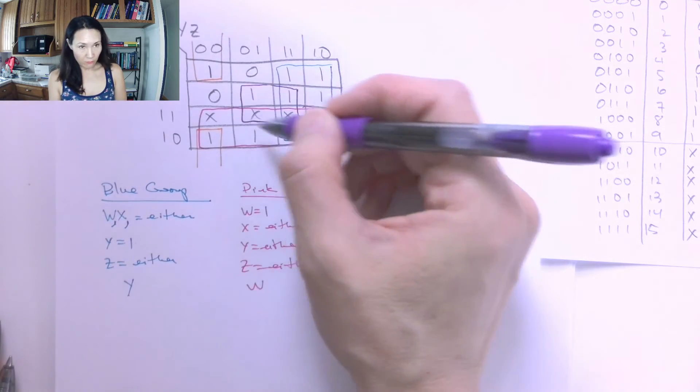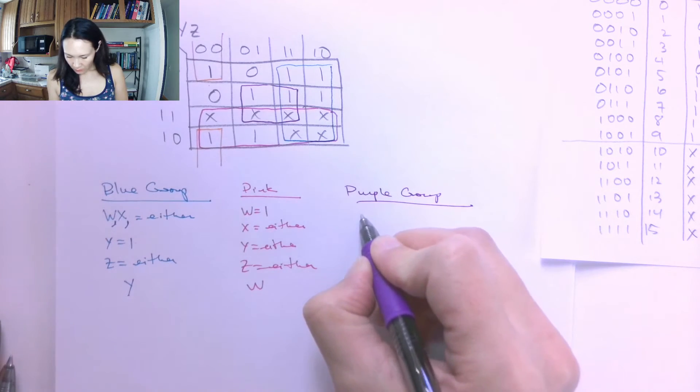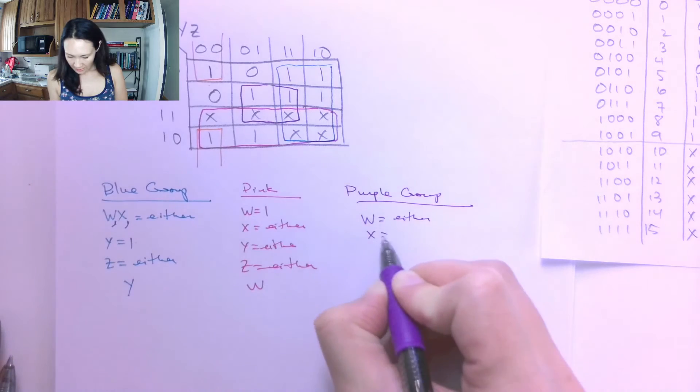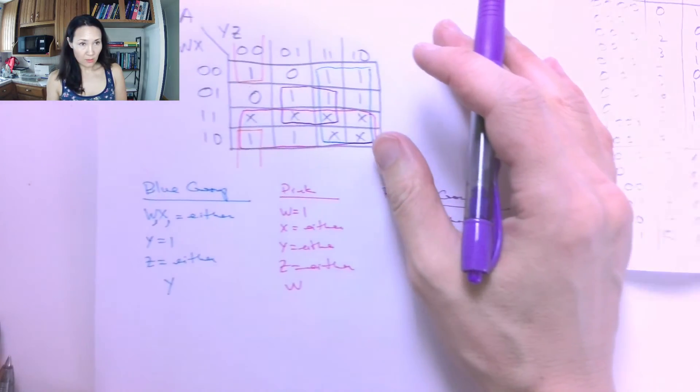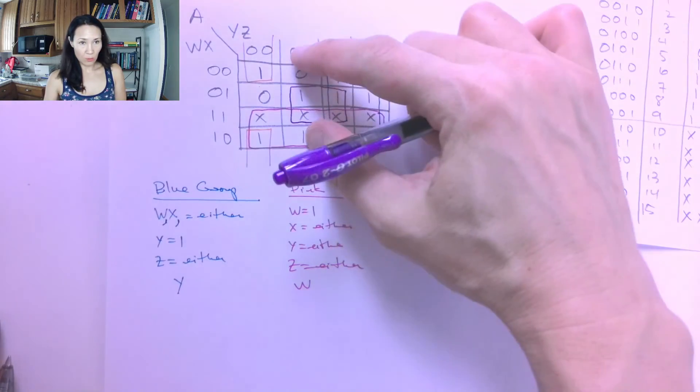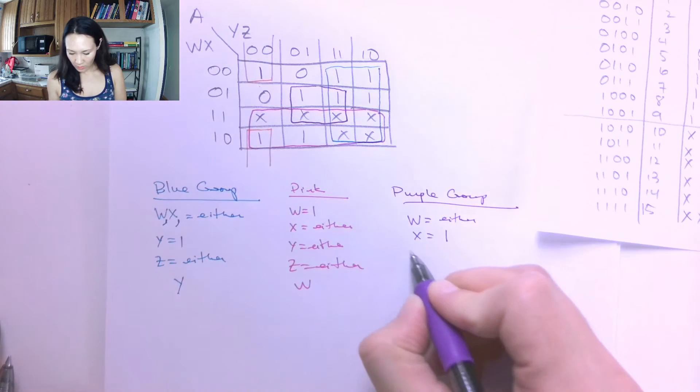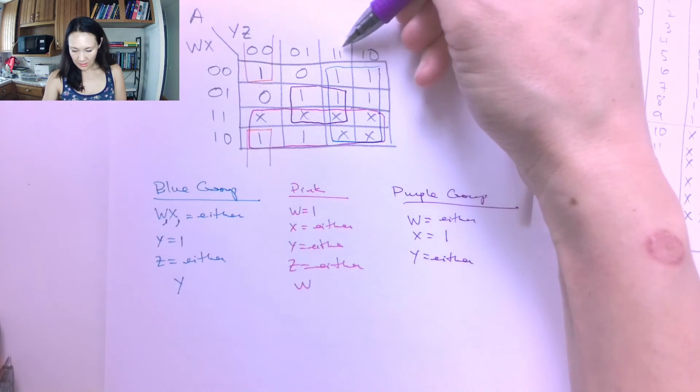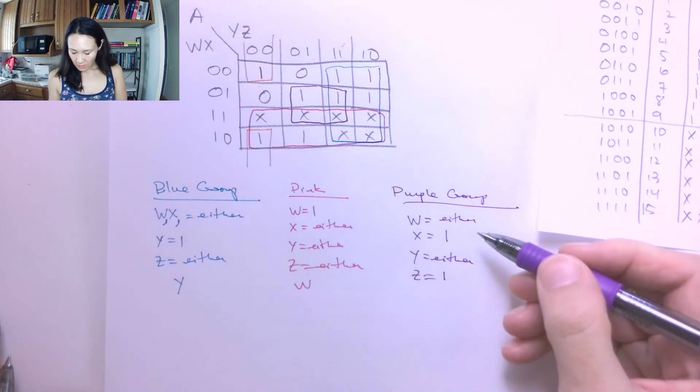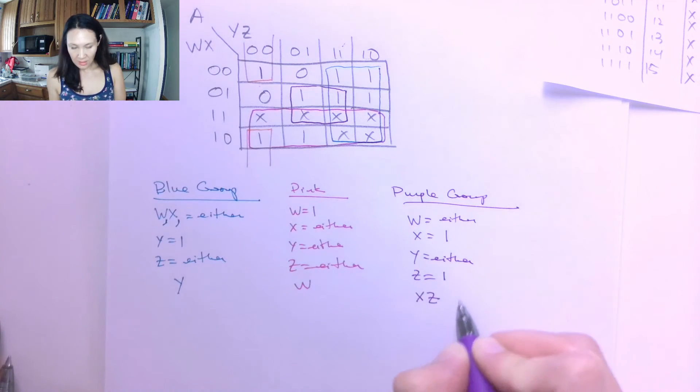Okay, great. So now let me do this group of 4 in here. So this is my purple group. For purple, I have that W is 0 or 1, so W can be either. I have that X has to be 1 because these are the ones for this X column. And wherever it's 0, we don't have the grouping. That's outside of our grouping. So it means X must be 1. And then up here for Y, I have that Y can be either 0 or 1. Y is either. And I have that Z is 1 because where Z is 0, that's outside of our grouping. So I have Z is 1. The W and the Y, therefore, get reduced out of my function. So I just have XZ is the product term for this purple group.